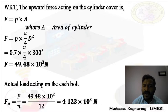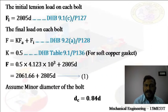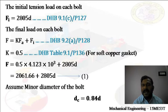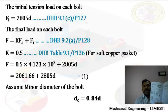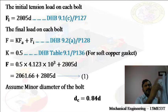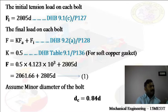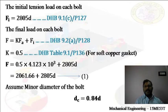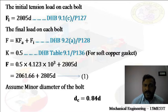Next, we have to find the initial tightening load. Initial tightening load is calculated using the formula Fi = 2805d. That is available in the design data handbook at equation number 9.1c, page number 127. Now we have calculated both initial load and external load on each bolt.